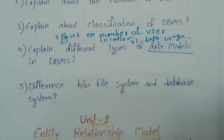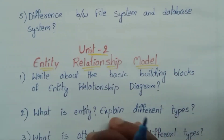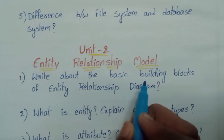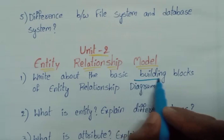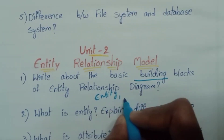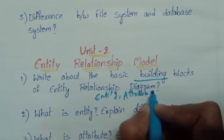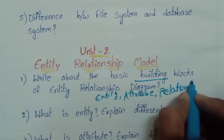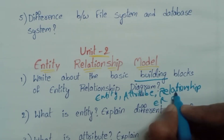Next, the second unit is the Entity-Relationship model. The first question: write about the basic building blocks of an entity-relationship diagram. Basic building blocks include entity, attribute, and value attached. What are the differences between entities and relationships? And draw an E-R diagram.